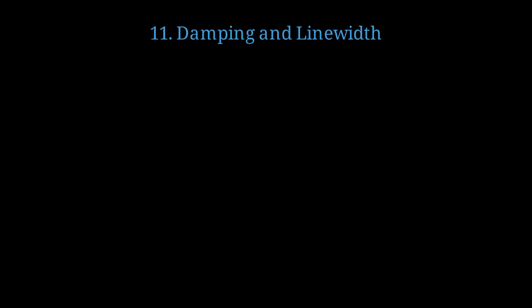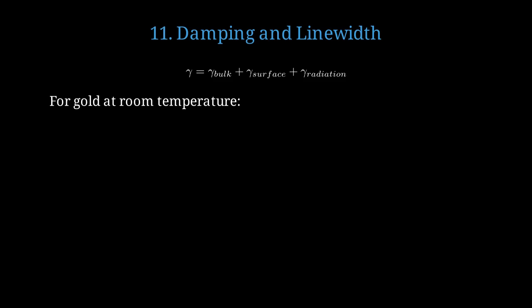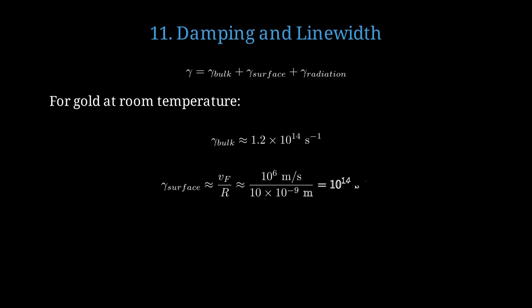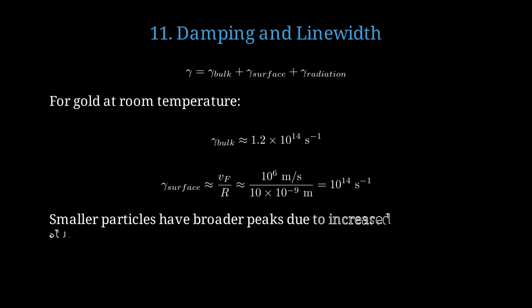No resonance is infinitely sharp. Let's understand what limits the plasmon resonance. The total damping rate gamma has three components: bulk damping from electron scattering, surface damping from boundary effects, and radiation damping from light emission. For gold nanoparticles at room temperature, bulk damping is approximately 1.2 times 10 to the 14 inverse seconds. Surface damping equals Fermi velocity divided by radius, which for a 10 nanometer particle gives about 10 to the 14 inverse seconds. This explains why smaller particles have broader resonance peaks, as surface scattering becomes more important as the surface-to-volume ratio increases.